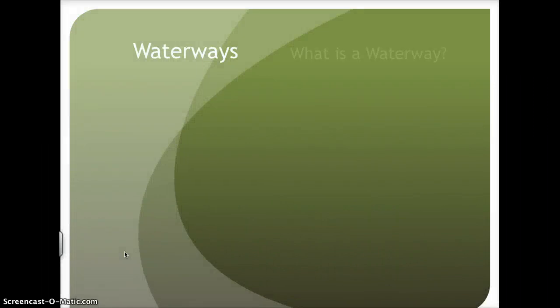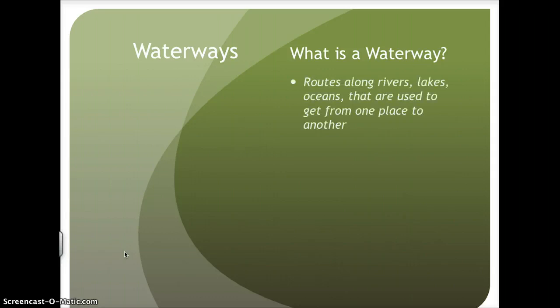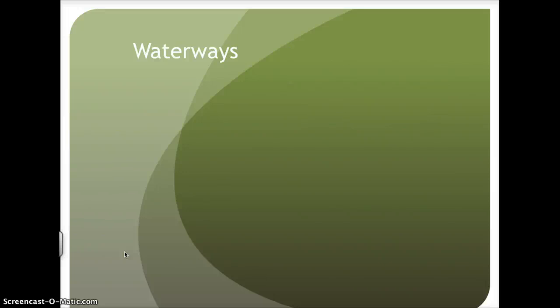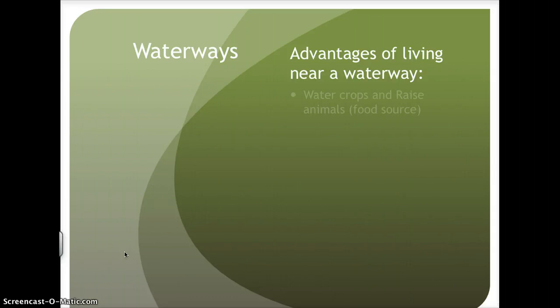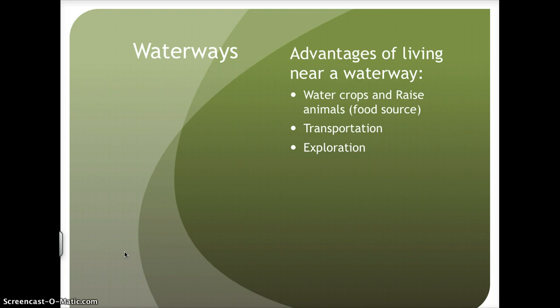Let's start with waterways. What is a waterway? They are routes along rivers, lakes, and oceans that are used to get from one place to another. Advantages of living near a waterway include the ability to water crops and raise animals, which allowed for a food source, transportation, and exploration. Upon the discovery of other civilizations due to exploration, trading can then take place with any excess crops or animals that have been raised.